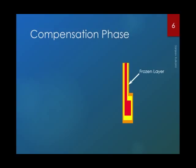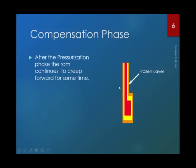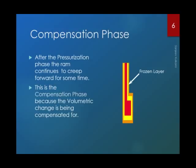In the compensation phase, the frozen layer is thickening, and due to the application of pressure on the polymer melt, the screw or ram continues to creep forward for some more time. The volumetric shrinkage gets compensated by this application of pressure. This phase is also called the holding phase or packing phase — terms typically used on the shop floor.